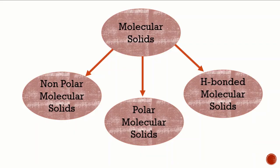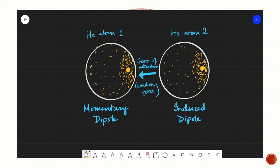In molecular solids, the constituent particles are molecules. For non-polar molecular solids, the constituent particles are either atoms like those of noble gases — helium, neon, argon, etc. — or non-polar molecules like hydrogen, chlorine, iodine, methane, etc. The operating forces between them are weak dispersion forces or London forces, involving momentary dipole-induced dipole interactions. These solids are generally soft because of the weak intermolecular forces present in them.